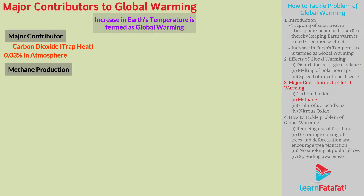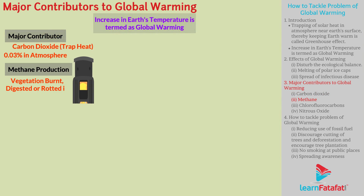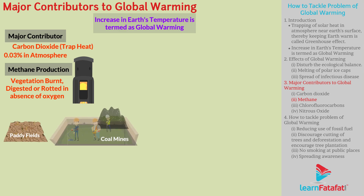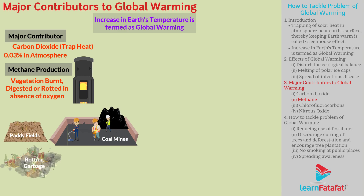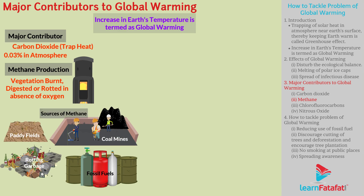Methane is produced when vegetation is burned, digested, or rotted in the absence of oxygen. Paddy fields, coal mines, rotting garbage dumps, and fossil fuels are sources from where methane is released into the atmosphere.